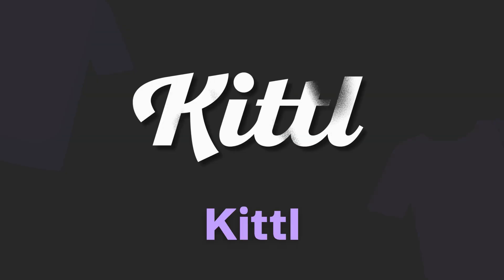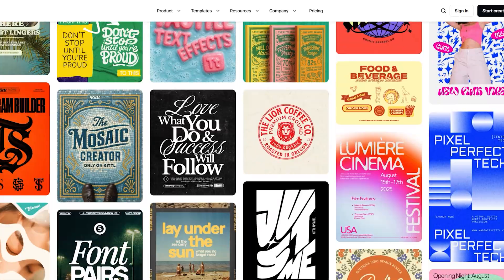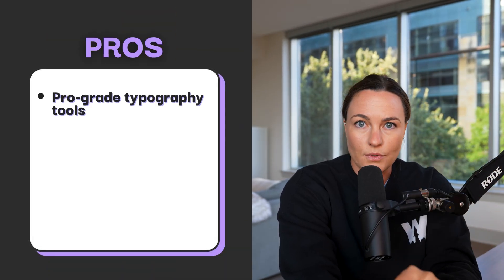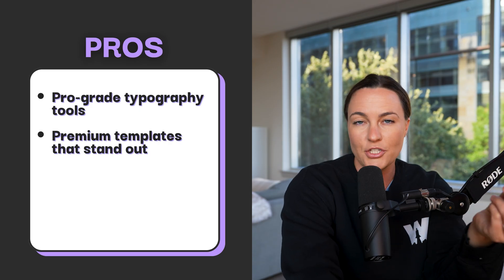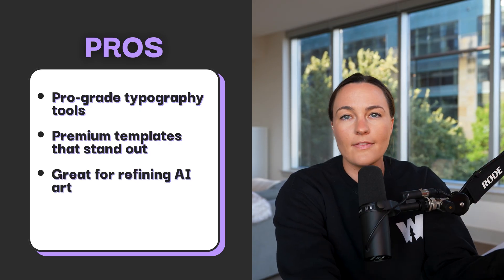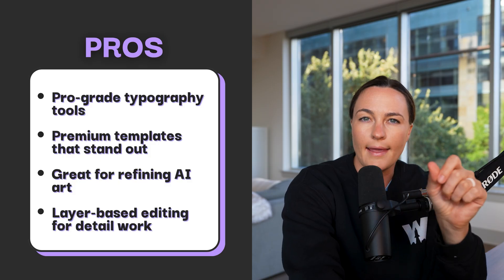Mystic POD is all about speed and simplicity, but maybe you want that high-end custom look — the kind of polish that makes your designs feel super premium. That's where tool number four comes in: Kittle. Think of Kittle as Canva's cooler, design-savvy cousin. It's not fully AI-first, but its typography and layouts are next level. So if you're trying to figure out what makes a t-shirt design look really nice, Kittle is a great place to start. Pros include pro-grade typography tools and premium templates that stand out — particularly for street fashion. It's great for refining AI art and layer-based editing for detailed work.